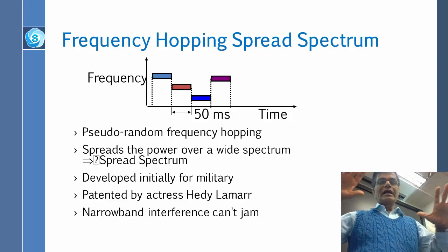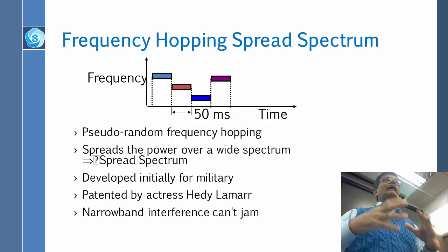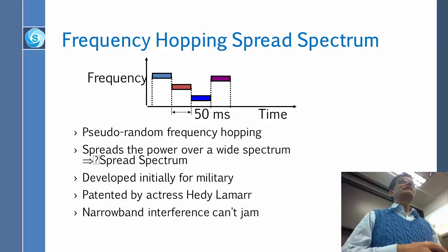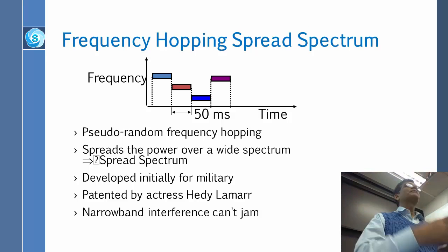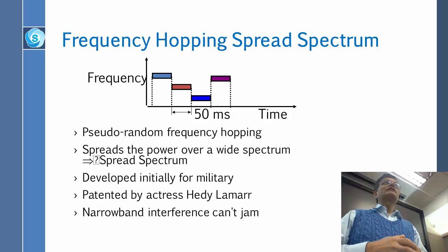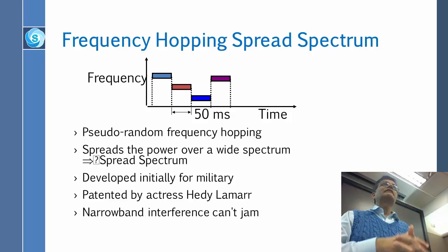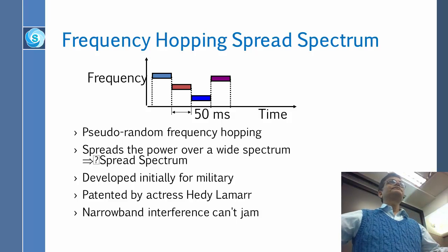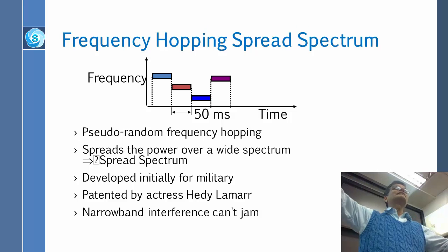I tell you, look, I'm going to start at the red frequency, and here is the formula to calculate the next frequency. So you use that formula — the random number generator — and you figure out what the next frequency is. Now it's going to change to that frequency; you switch, I switch, both sender and receiver. Everybody else doesn't switch — everybody else is somewhere else.